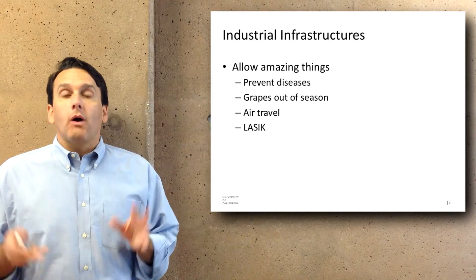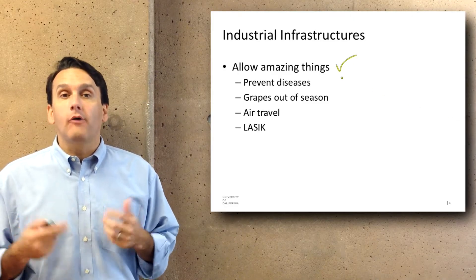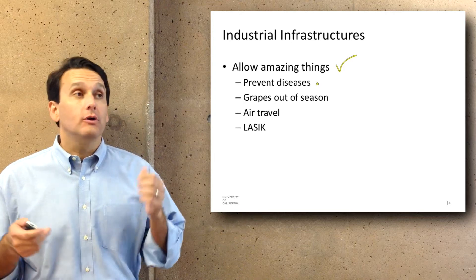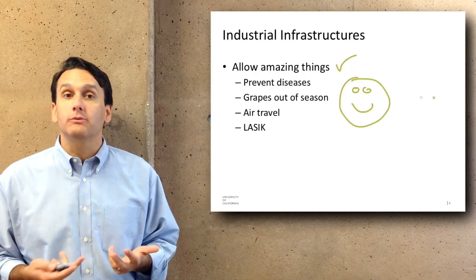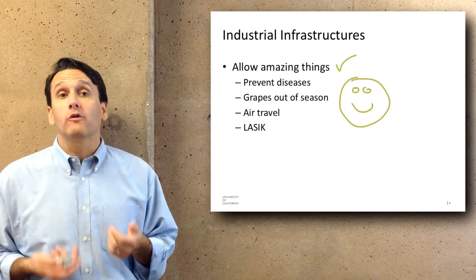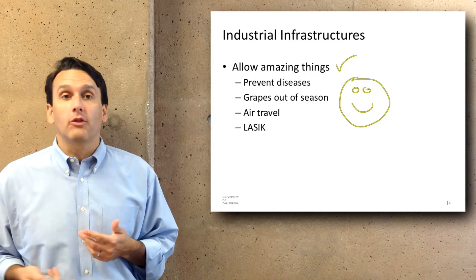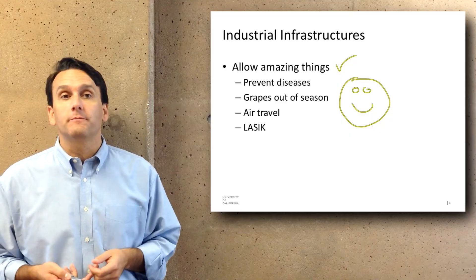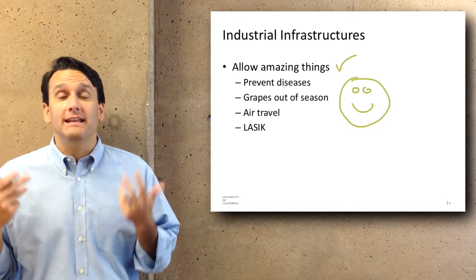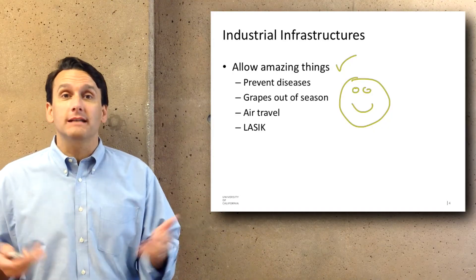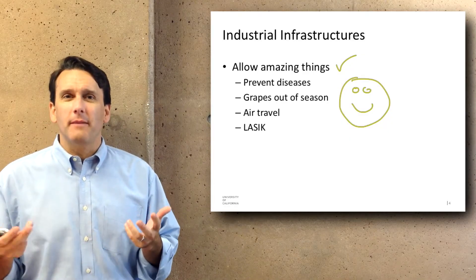Before we begin, I wanted to frame this: the industrial infrastructures in which we live allow for some amazing things. We have a healthcare system that allows for vaccination and all of the different treatments we have at our disposal, which are very powerful at preventing and treating disease. The food system allows us to have grapes out of season shipped in from other countries. Air travel is an excellent example where you can be 35,000 feet in the air in a metal container rocketing at 500 miles an hour, which seems dramatic to at least the primate part of my brain.